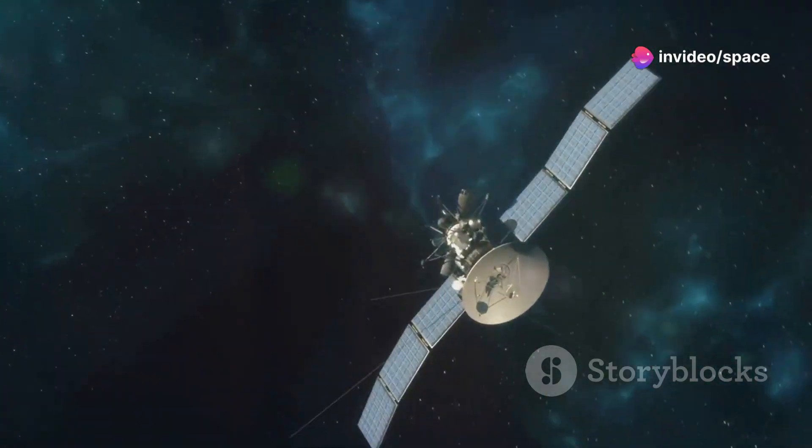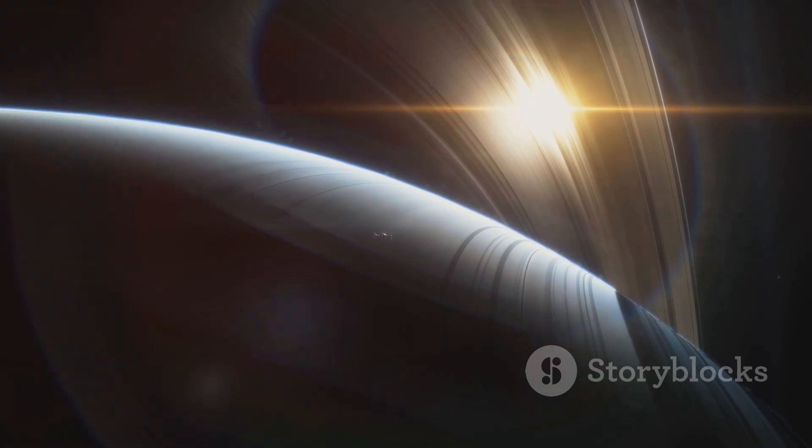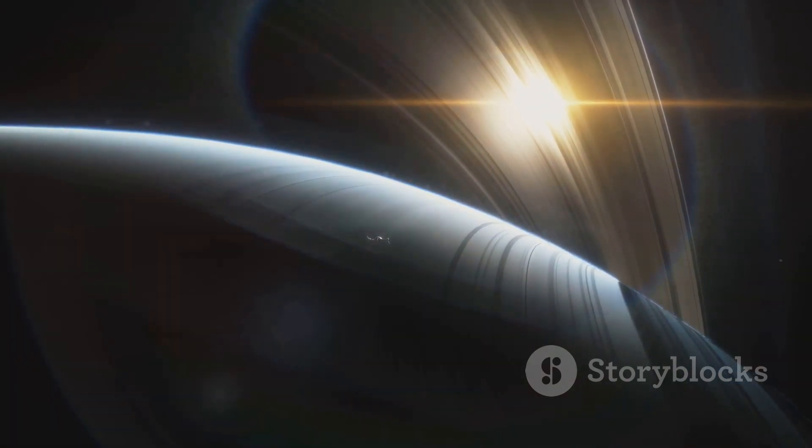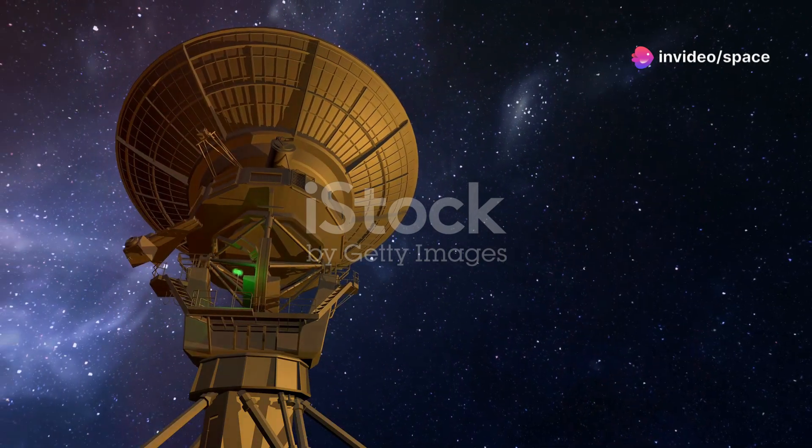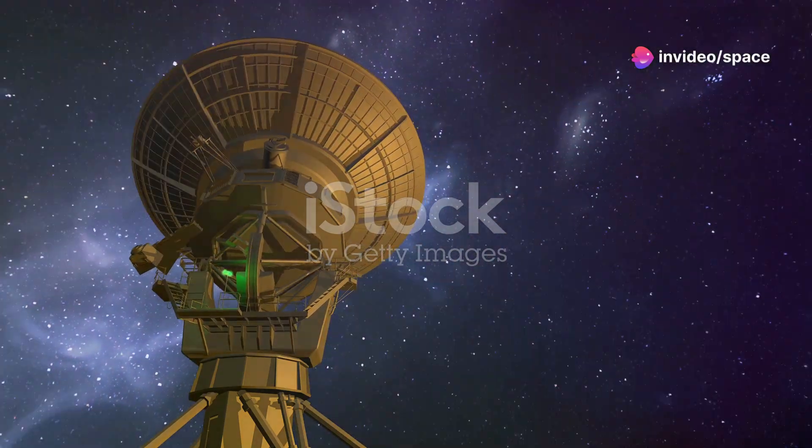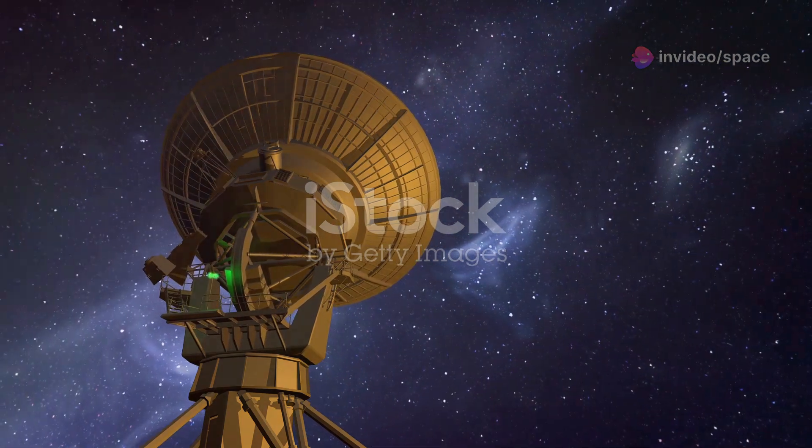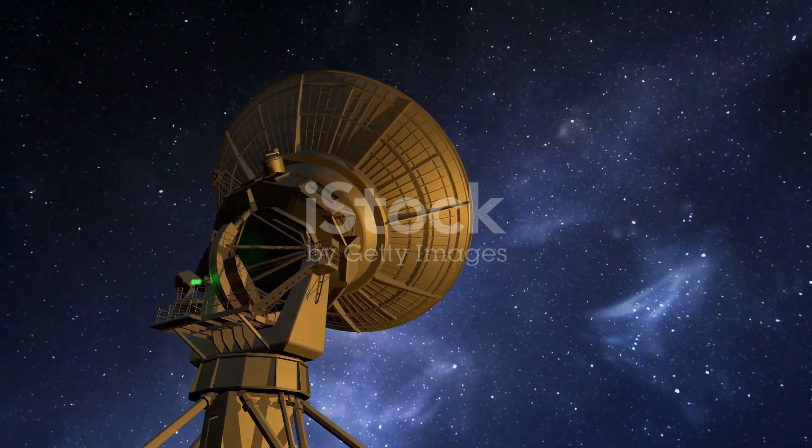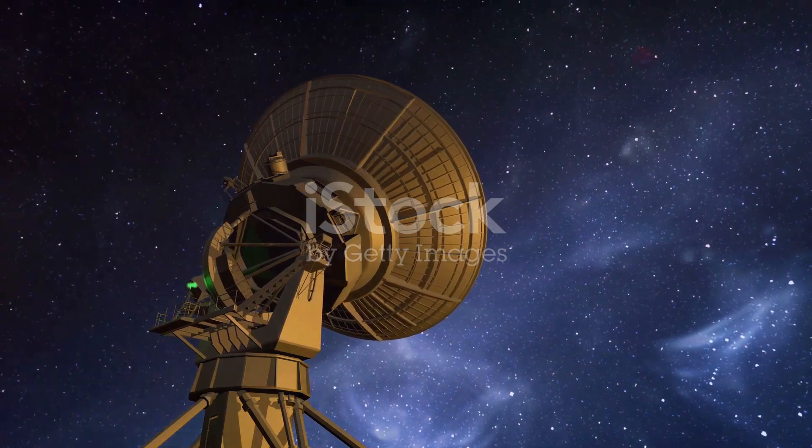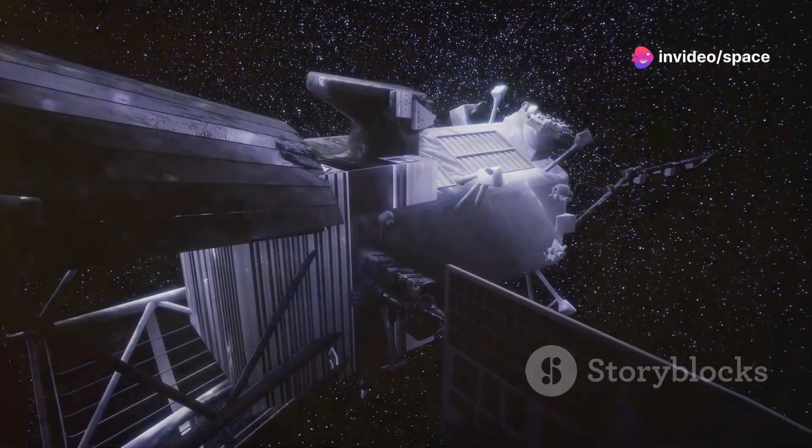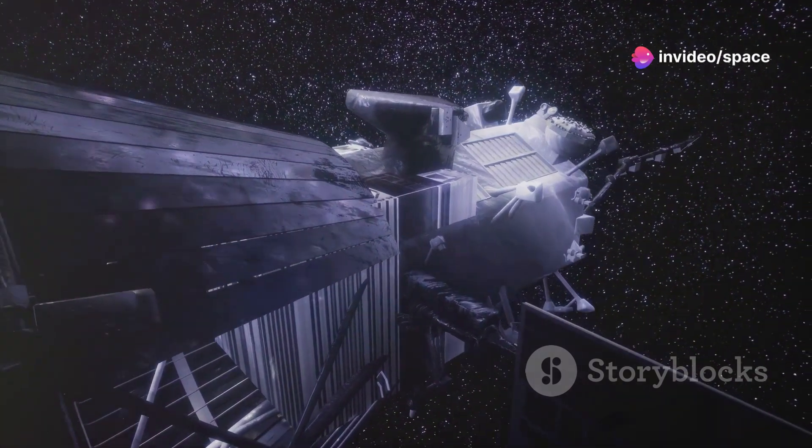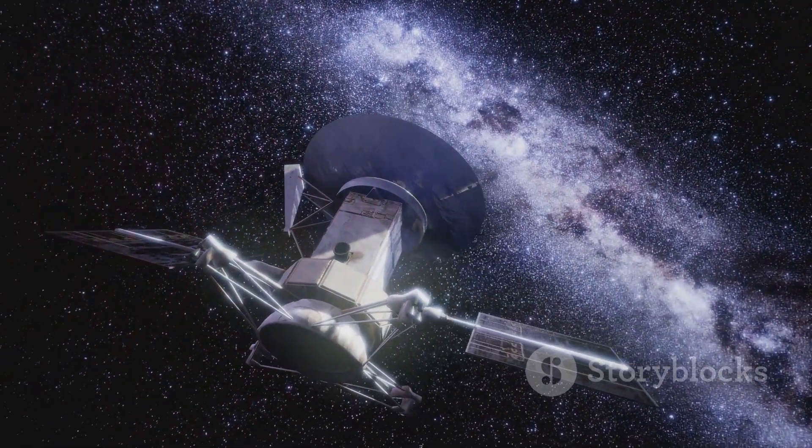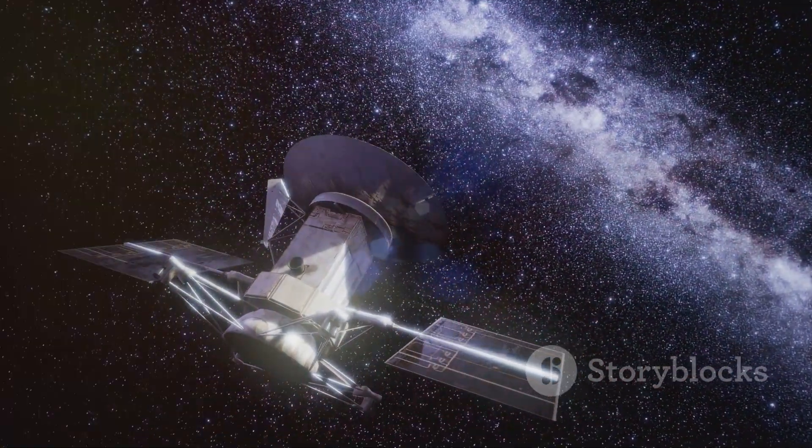Once Voyager crossed into interstellar space, its mission transformed into a test of patience and endurance, both for the spacecraft and for those of us waiting back on Earth. Its faint signals traveling at the speed of light took hours, eventually even days, to reach us. Each transmission was a precious whisper from an unimaginable distance, a fragile thread connecting us to the edge of the unknown. The probe, built with 1970s technology and powered by a slowly fading RTG, was forced to shut down its instruments one by one, conserving every last bit of energy to keep its heart beating just a little longer.